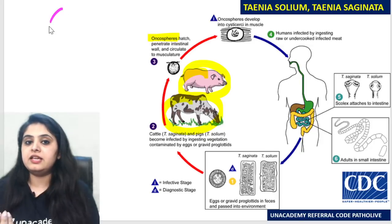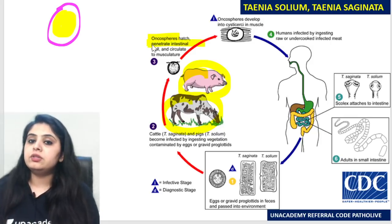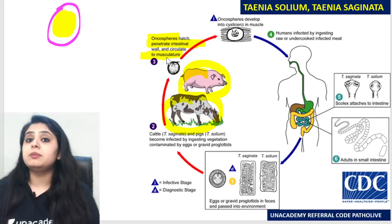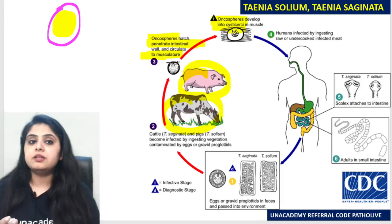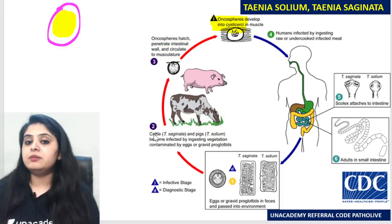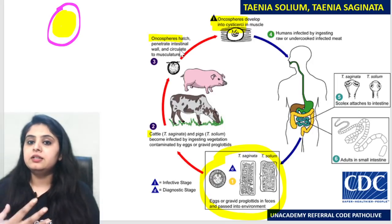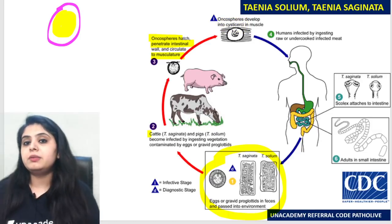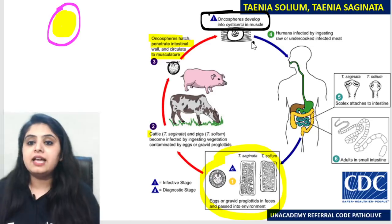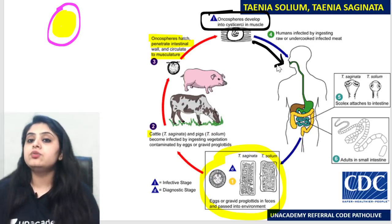After these animals have eaten the eggs or proglottids, the onchospheres from inside the egg are going to hatch out. Inside the egg there is an onchosphere with hooklets that will hatch out. It will then penetrate the intestine of the animal — the pig or the cattle — and go to the musculature, the muscle, where these onchospheres develop into cysticerci. So the animal ingested eggs or proglottids while grazing, the onchosphere comes out in the intestine, penetrates, goes to the muscle, and develops into cysticerci — which is the form we ingest when we eat undercooked or raw meat.